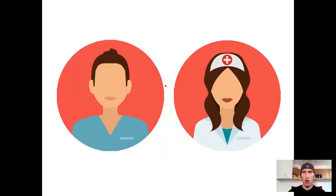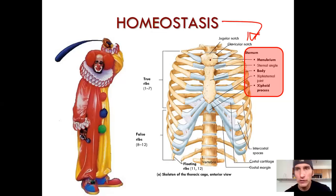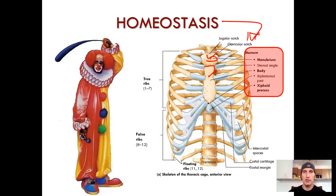Homeostasis moment right away! We're going to focus our homeostasis — or clinical application — moment on the sternum. The sternum consists of three parts: superiorly the manubrium, inferior to that the body of the sternum, and most inferior is a chunk of cartilage that later ossifies or hardens, called the xiphoid process.